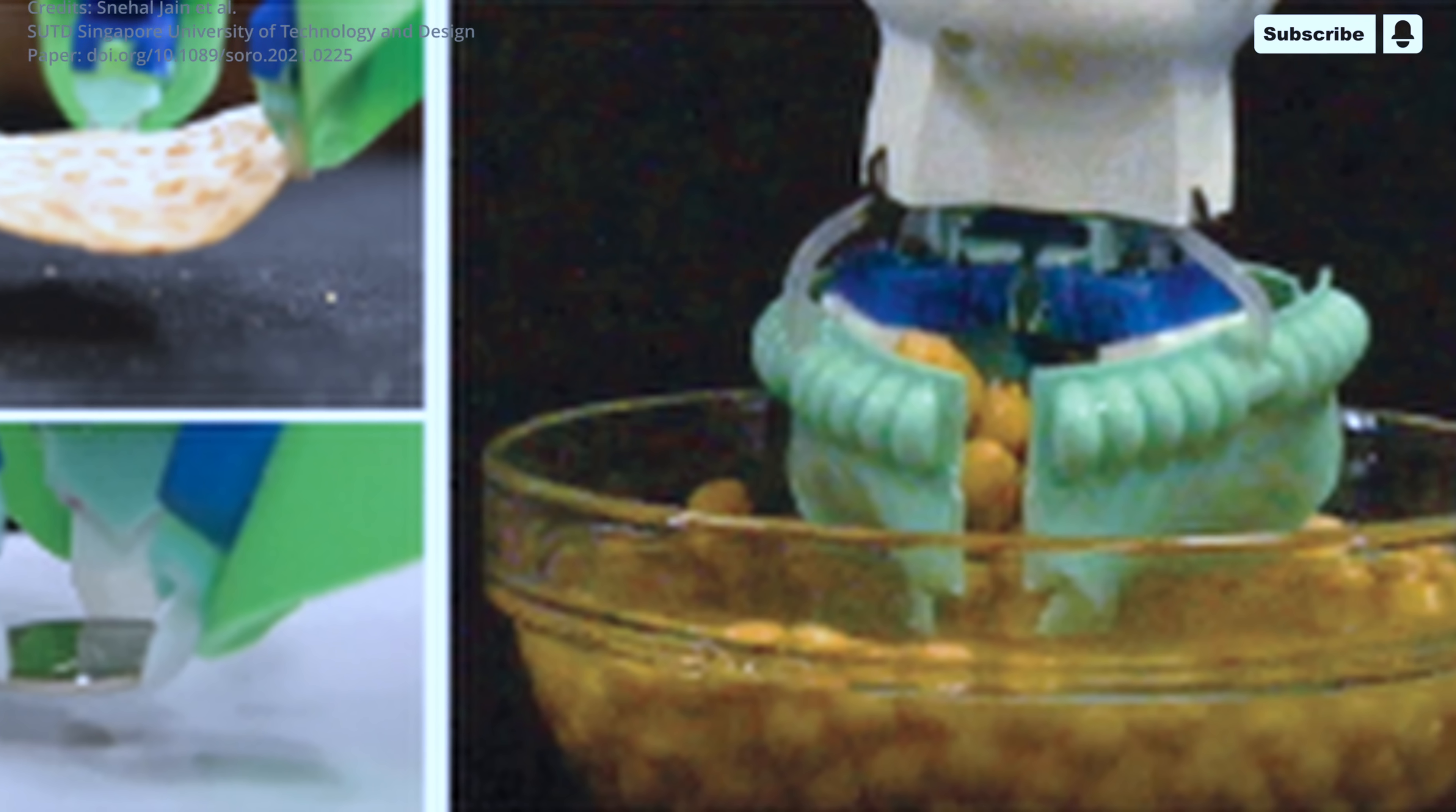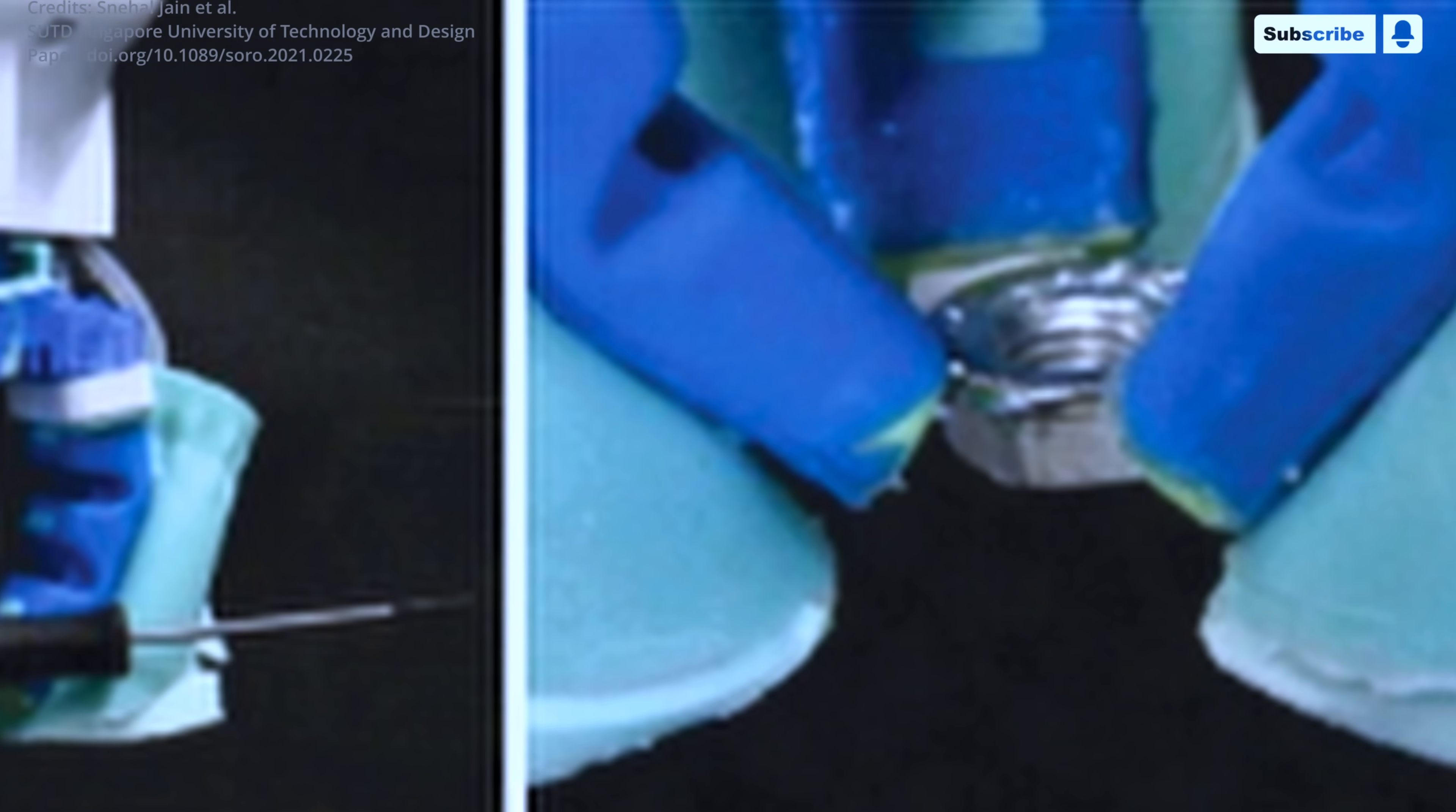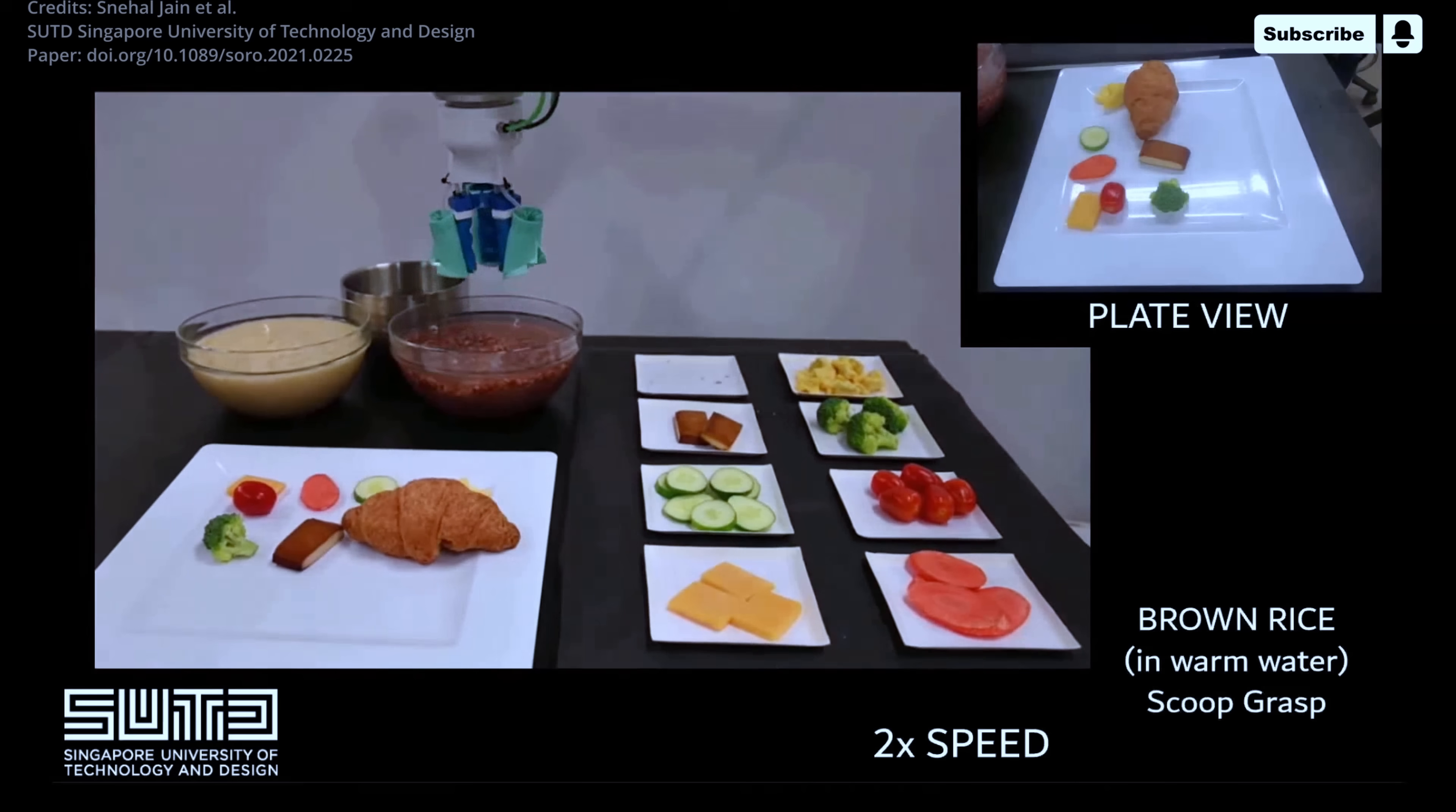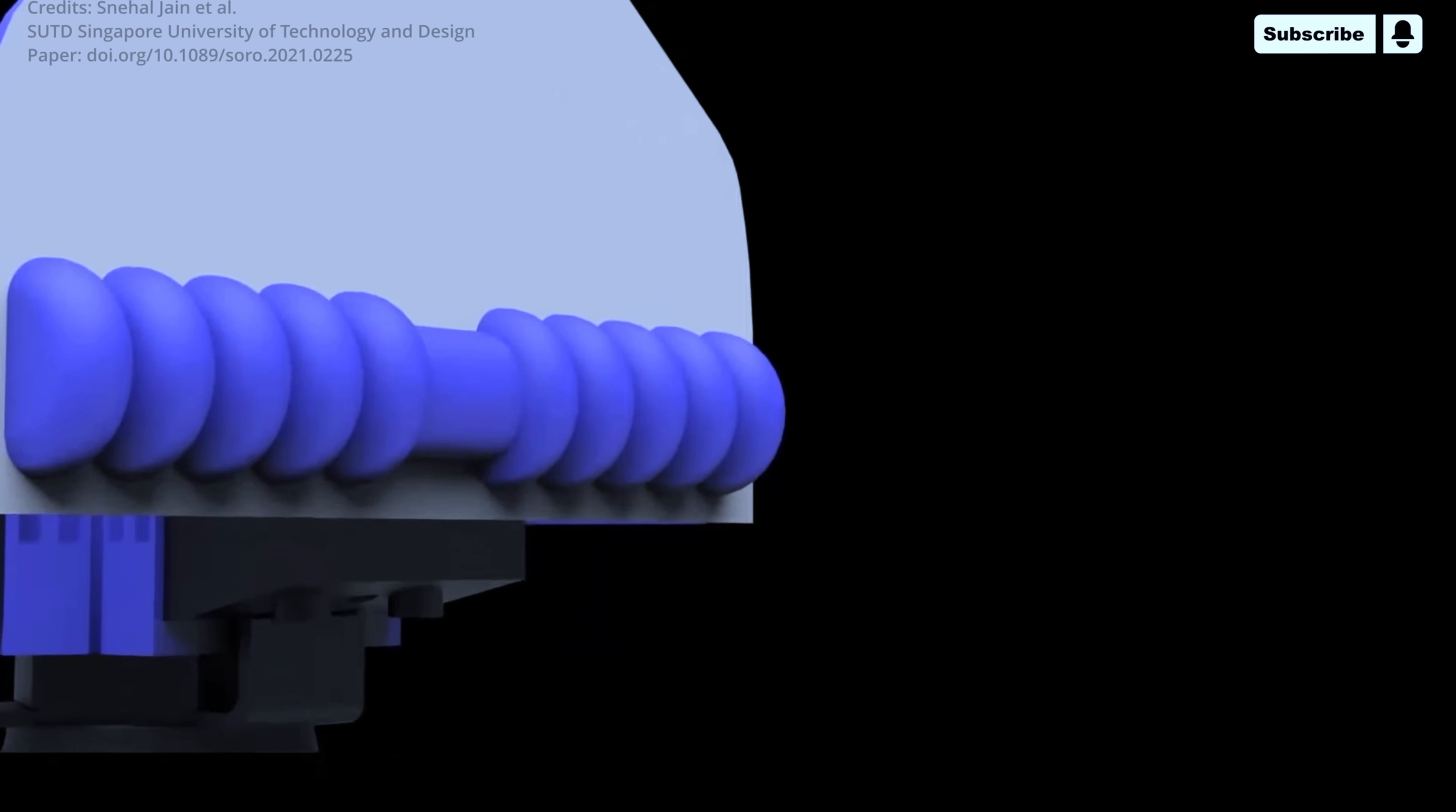Additionally, it can securely hold large and varied items such as melons, cereal boxes, or detergent refill bags which can weigh up to 1.4 kilograms, regardless of their shape or flexibility. To overcome the limitations of soft grippers, the SUTD research team designed the RWS gripper using multimodal actuation.